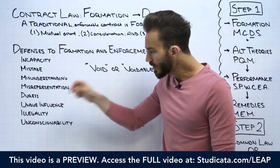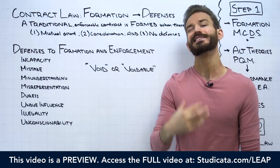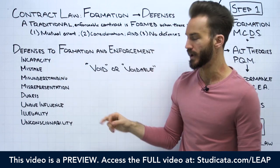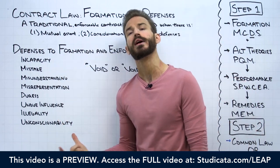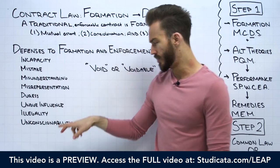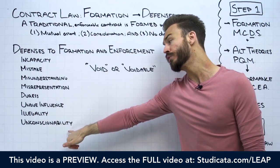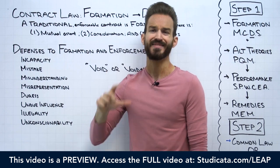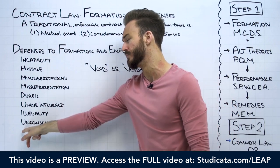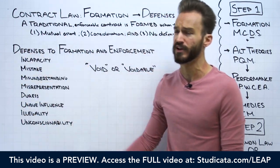Duress is simply the use of improper threats to coerce another party. Undue influence is the use of excessive pressure on a party who is susceptible to such pressure. Illegality is when the consideration or performance under the contract is illegal — imagine hiring someone to commit a crime. Unconscionability is when the terms of the contract are so unfair or oppressive that it shocks the conscience of the court, and the court will refuse to enforce it. We're going to jump into all of these defenses in a lot of detail, starting with incapacity.